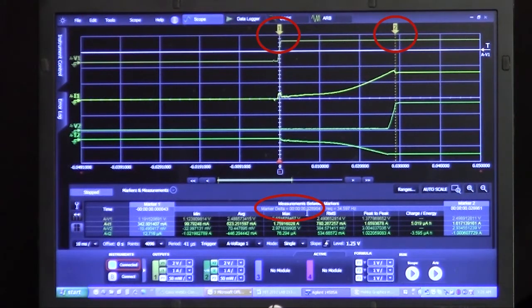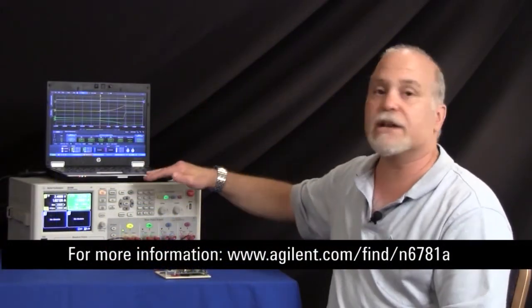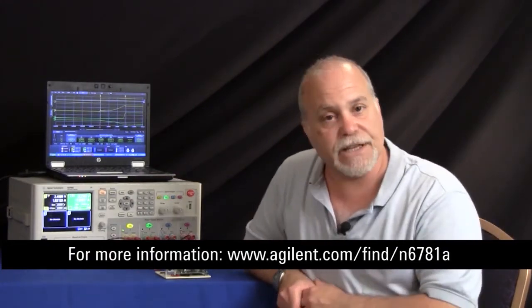So as you can see this measurement was very easy to do, it was just a simple matter of putting the markers on the traces and all of that trace information came out of a single box called the DC power analyzer. Thank you.